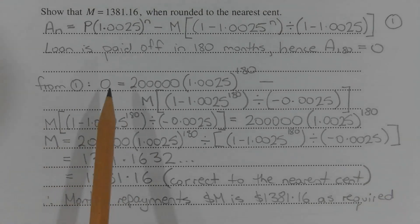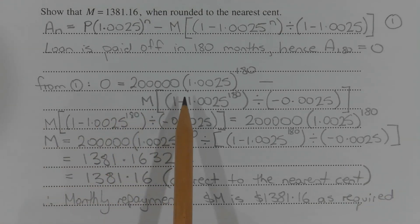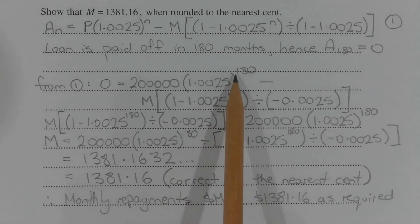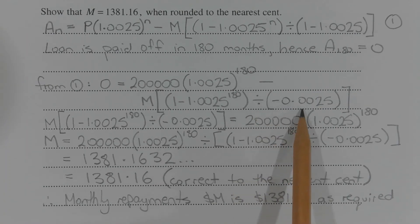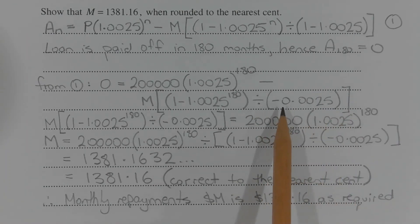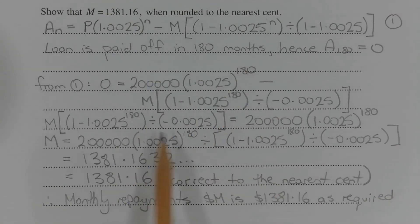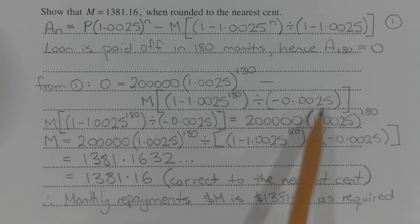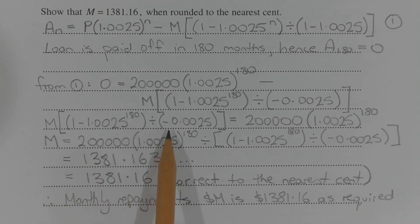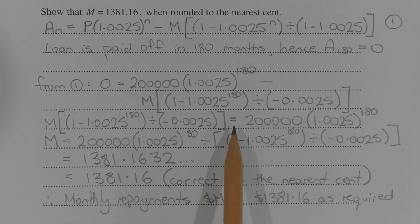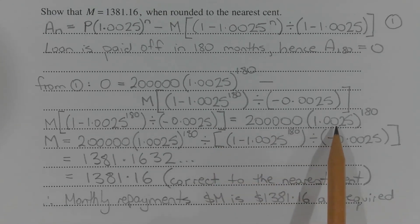From equation 1 we have 0 equals 200,000 times 1.0025 to the power of 180 minus M times 1 minus 1.0025 to the power of 180 in brackets divided by negative 0.0025. So 1 minus 1.0025 gives this value.